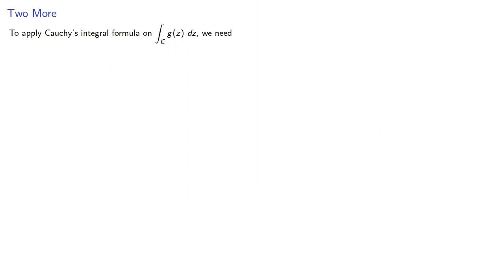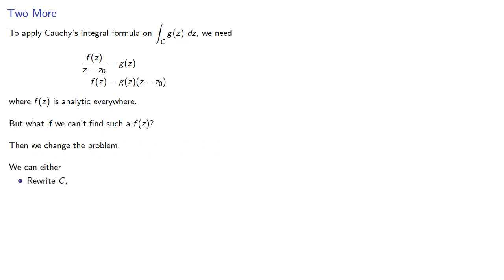To apply Cauchy's integral formula on some contour integral, we need f(z) to be analytic everywhere. But what if we can't find such a function? Then we change the problem. We can either rewrite the contour C or rewrite the integrand.